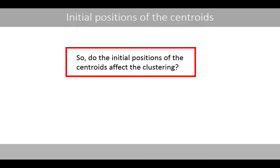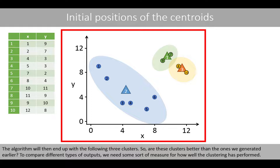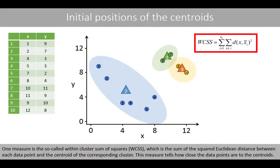Do the initial positions of the centroids affect the clustering? Unfortunately, yes. For example, what would happen if the centroids are initially placed at different positions? The algorithm would end up with different three clusters. To compare different outputs, we need some sort of measure for how well the clustering has performed. One measure is the so-called within-cluster sum of squares, which is the sum of the squared Euclidean distance between each data point and the centroid of the corresponding cluster. This measure tells how close the data points are to the centroids.